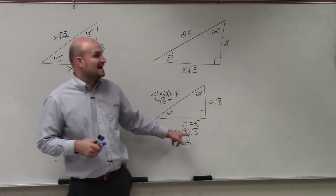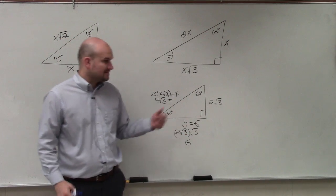3 times 3 is 9. Square root of 9 is 3. 3 times 2 is 6.